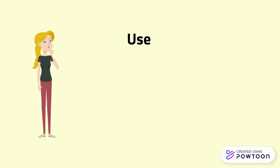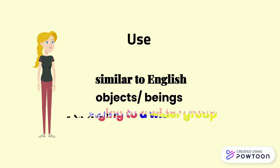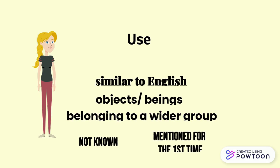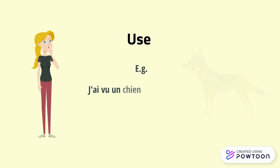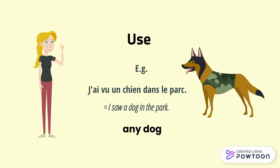The use of French indefinite articles is similar to English ones. The indefinite article refers to an object or a being, or some objects or some beings, belonging to a wider group that is not known or that is mentioned for the first time. For instance, 'j'ai vu un chien dans le parc' means 'I saw a dog in the park'. This can be any dog — we have no indication about this dog.